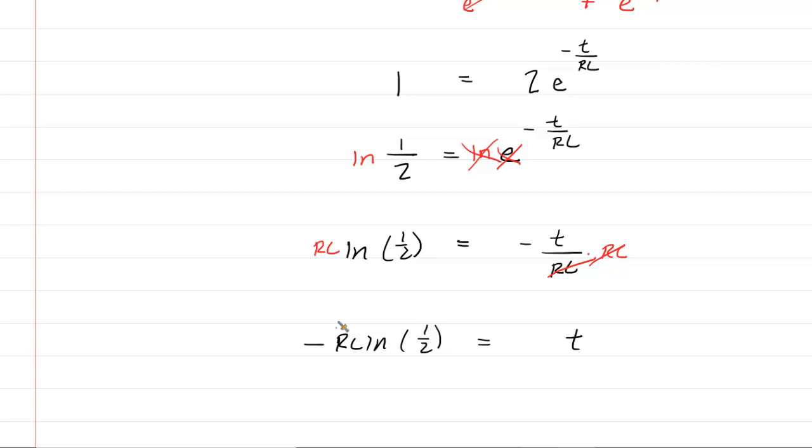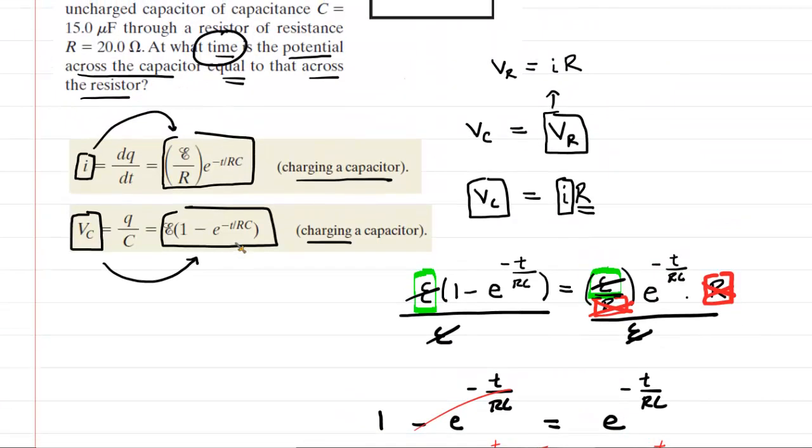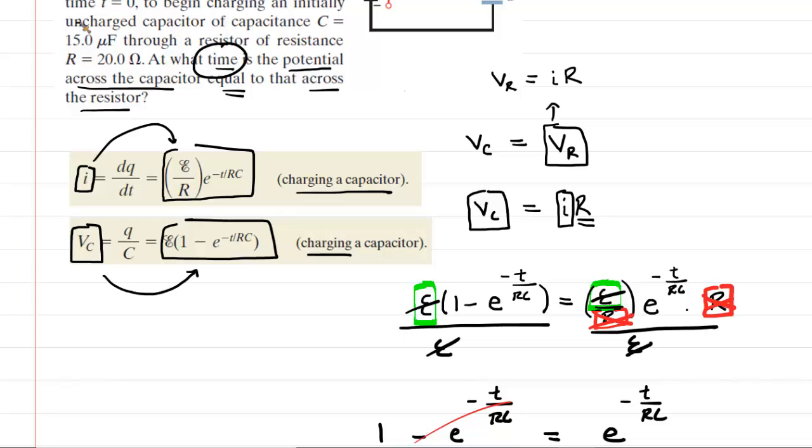We simply have to plug in the resistance and the capacitance, which should have been given in the question. Indeed, they were. So we have 15 microfarads, 20 ohms.